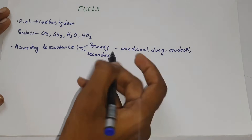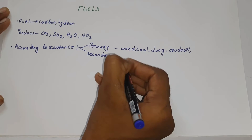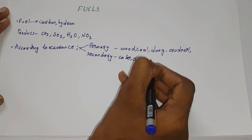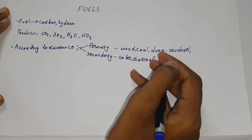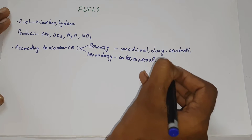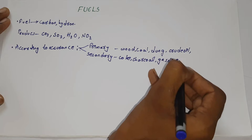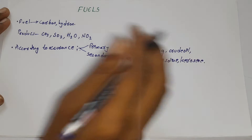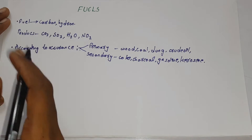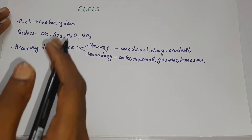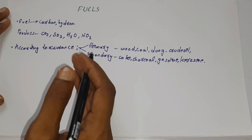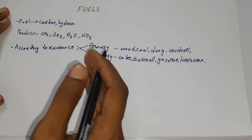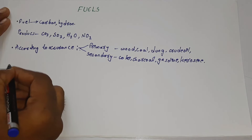The secondary fuels are those derived from primary fuels and include coke, charcoal, gasoline, and kerosene. There are a number of different primary fuels, which also include natural gas and uranium. The secondary fuels also include biogas.